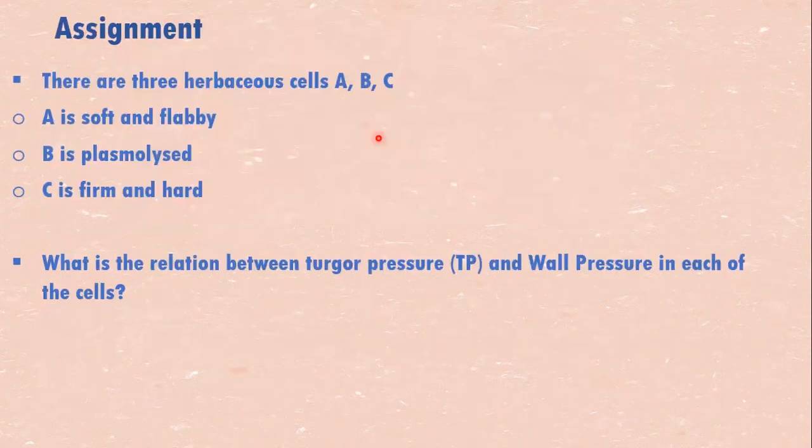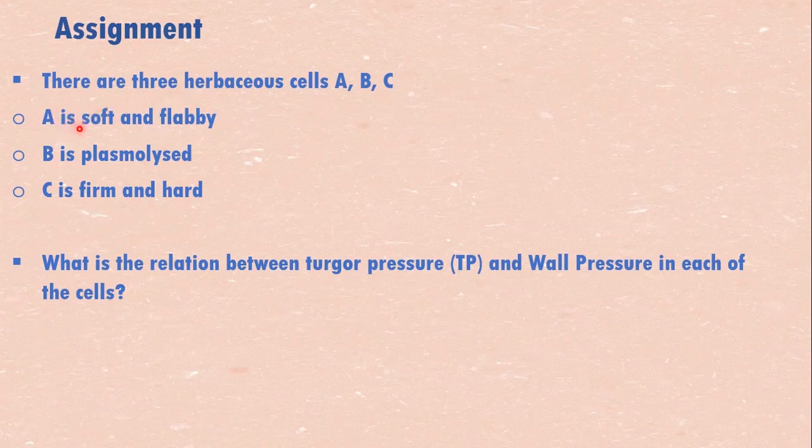Now, we have a few questions. If there are three herbaceous cells, cell A is soft and flabby, cell B is plasmolyzed, cell C is firm and hard, what is the relation between turgor pressure and wall pressure in each of the cell states?